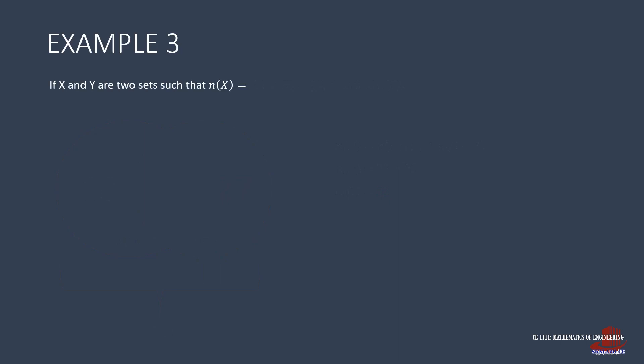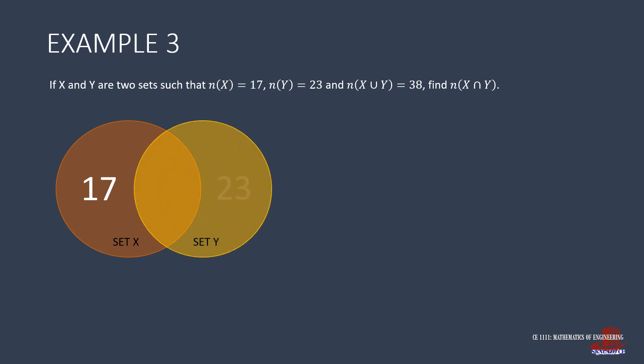Another example works on sets X and Y where X has 17 elements, Y has 23, and their union makes 38 elements. This example is similar with the first one, so draw the first circle of set X with 17 elements, then set Y with 23. The union of sets X and Y results to 38 elements, so there should be some elements in their overlap.